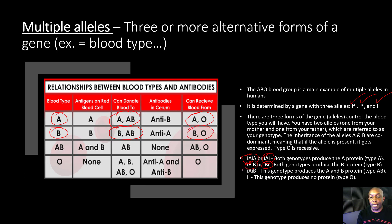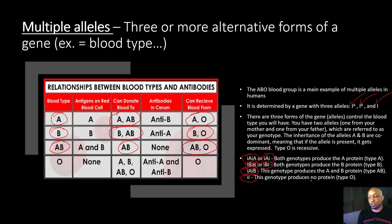If you receive an A from mom and a B from dad, this genotype produces both the A and B proteins — type AB. So you'd have type AB blood, meaning you can donate blood to A or B, and can receive blood from AB or O. Type AB is considered the universal receiver because you can receive blood from any blood type. And lastly, if you receive an I from mom and an I from dad, this genotype produces no protein — type O, which is recessive. Blood type O can donate to A, B, AB, and O because it is considered the universal donor, but can only receive blood from type O.